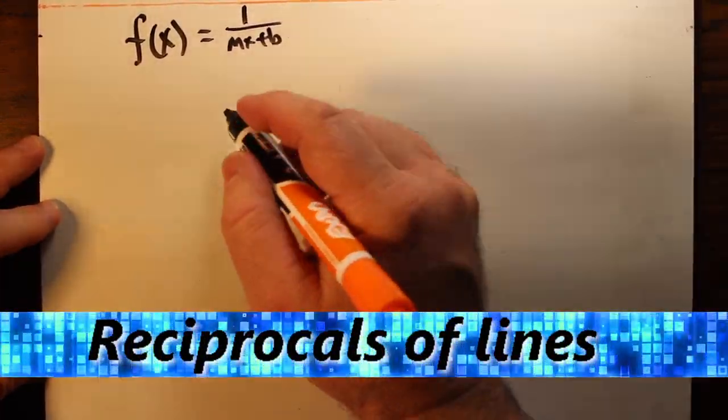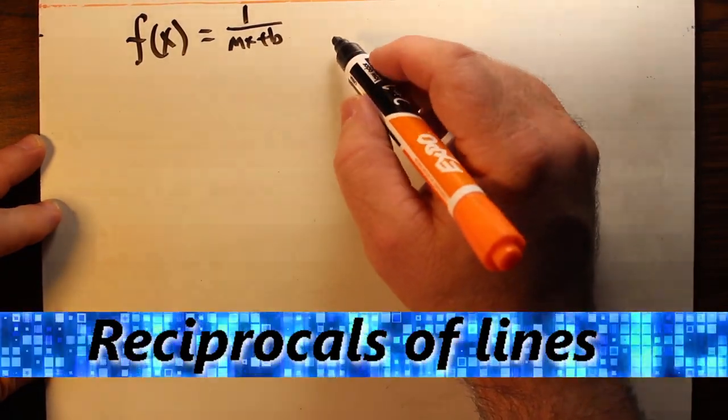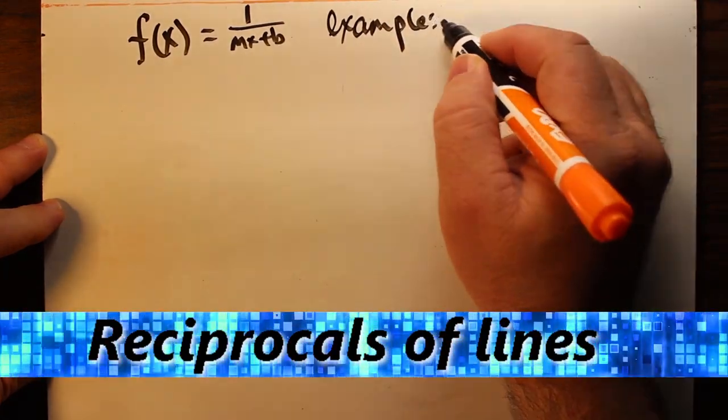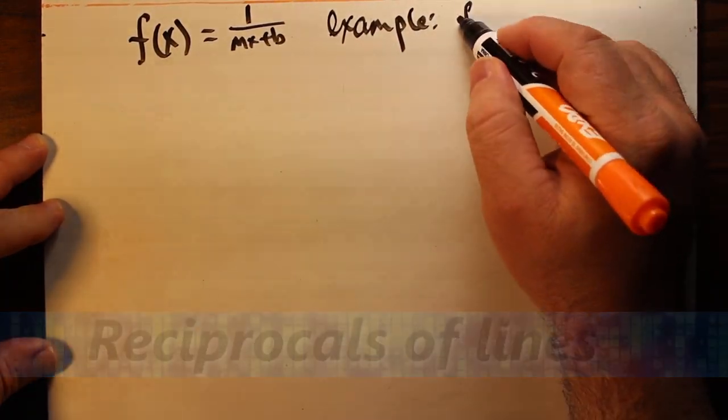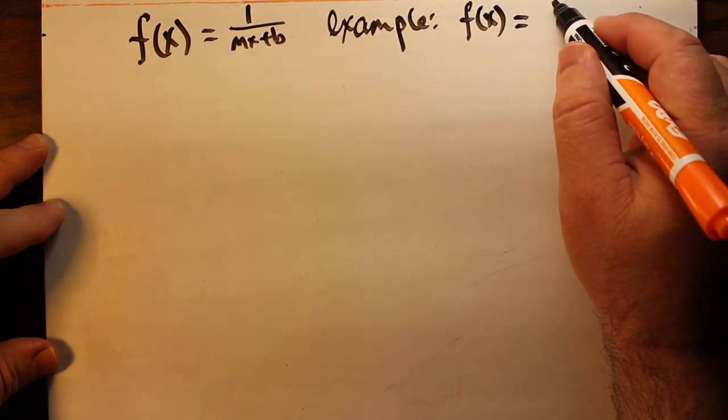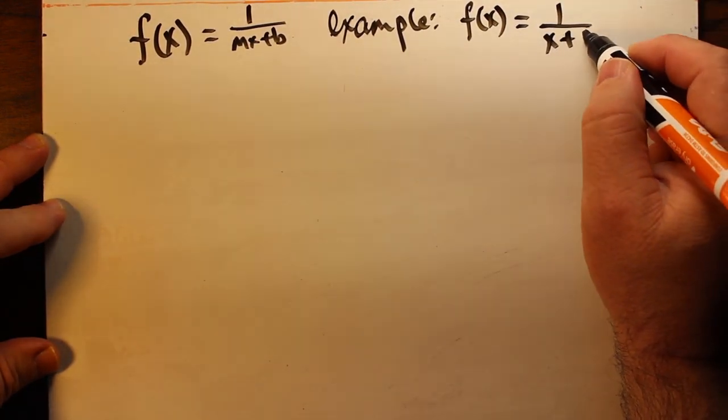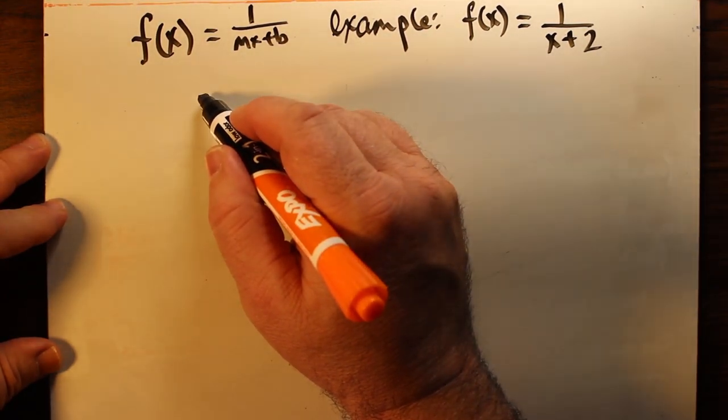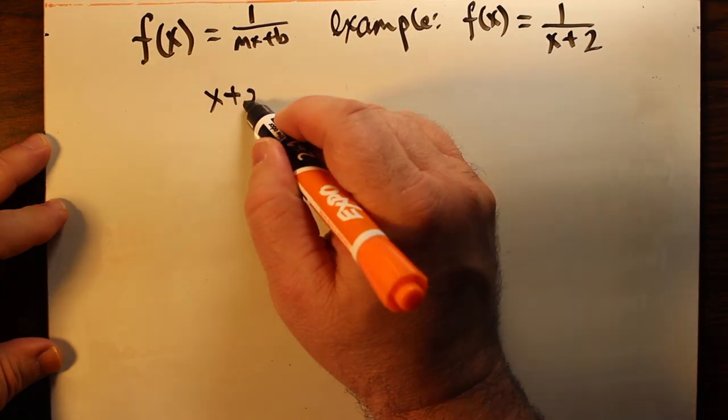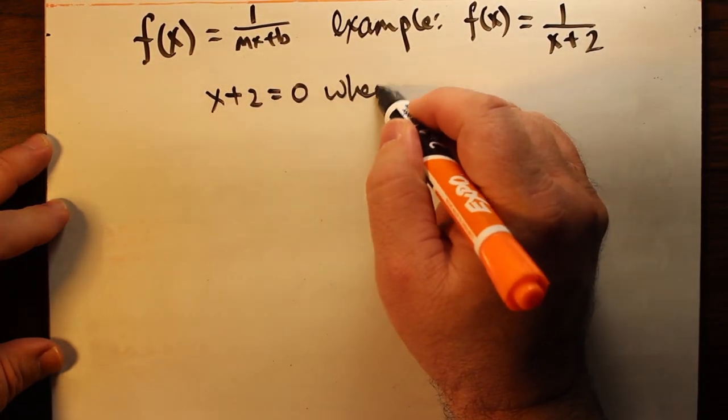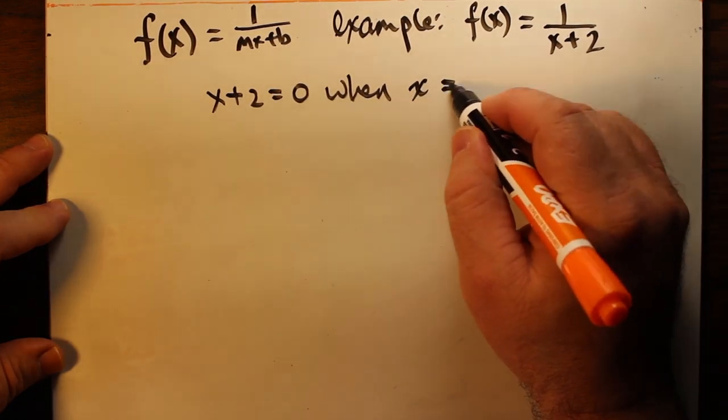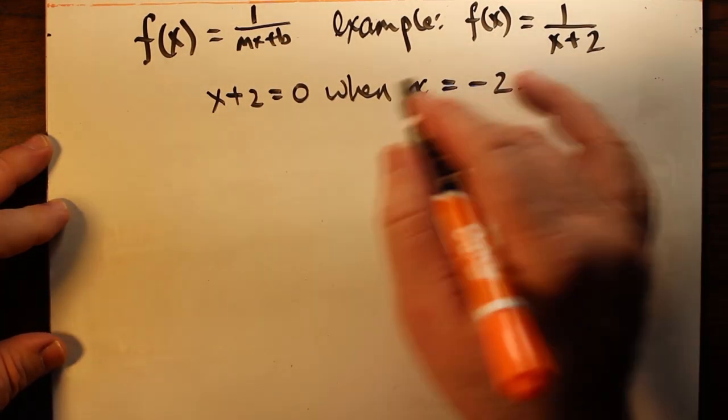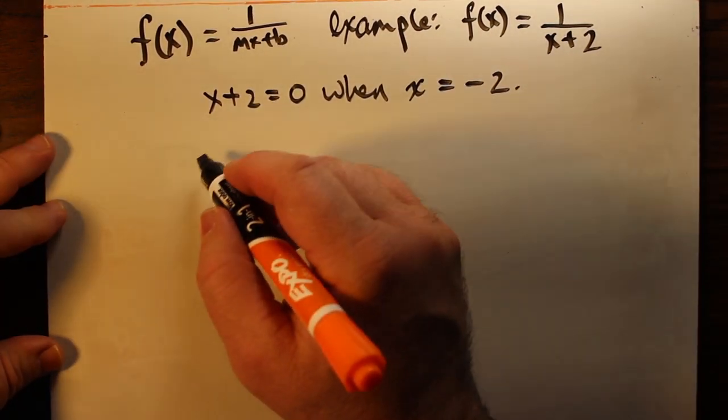Now on to another function. What I'm going to talk about is a single example, a simple one. The example we're going to choose is f(x) equals one over x plus two. It's helpful to think of one over x from the last example as a parent function of this function.